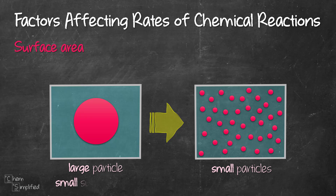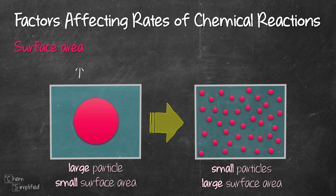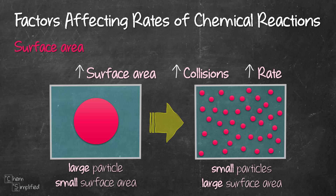So the large particle has a smaller surface area, whereas the small particle has a larger surface area. As we increase the surface area of our solid reactant, that will increase the collisions between the particles, therefore increasing the rate of the reaction. So the relationship between surface area and rate is directly proportional.